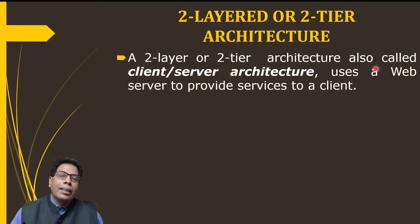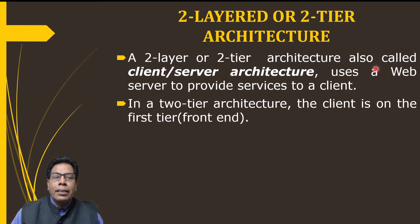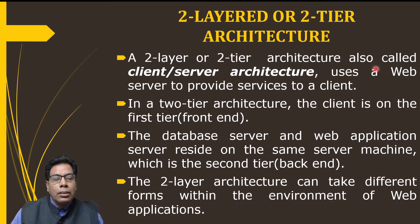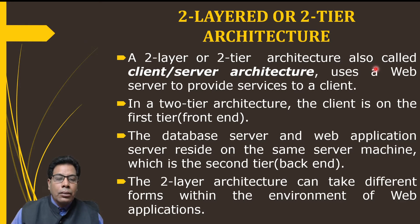In two-tier architecture, it is also called client-server architecture. It uses a web server to provide services to a client. The client is on the first tier — we call it the front end — whereas the database server and the web application server reside on the same server machine, which is the second tier, called the back end. The two-layer architecture can take different forms within the environment of the web application, and it may use static web pages or dynamic web pages.